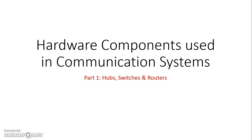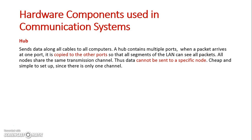We're looking at different hardware components used in communication systems — today specifically hubs, switches, and routers, which are all used to connect different devices on a network. Firstly, we have a hub, and basically a hub is the cheapest and easiest way to set up a small local area network.